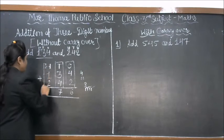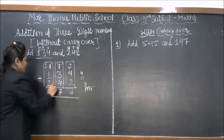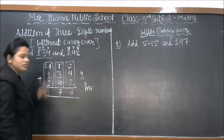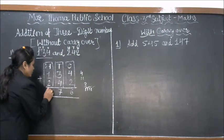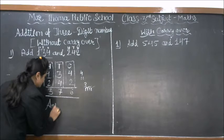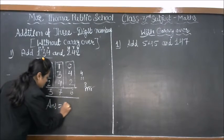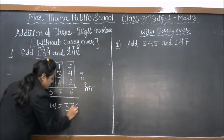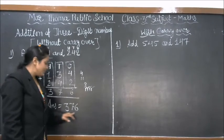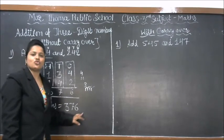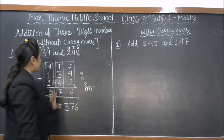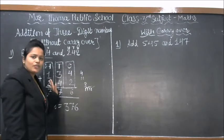In the hundreds column we have 1 and 2. So 2 plus 1 equal to 3. Like this we get the answer 376. This is addition without carry over.